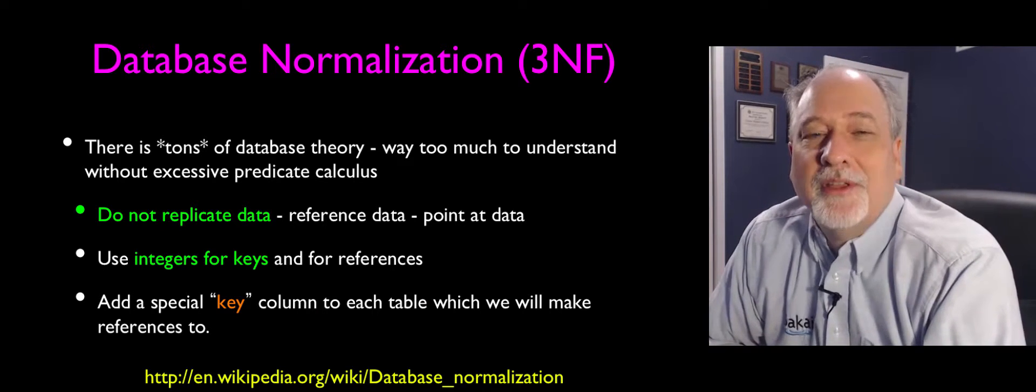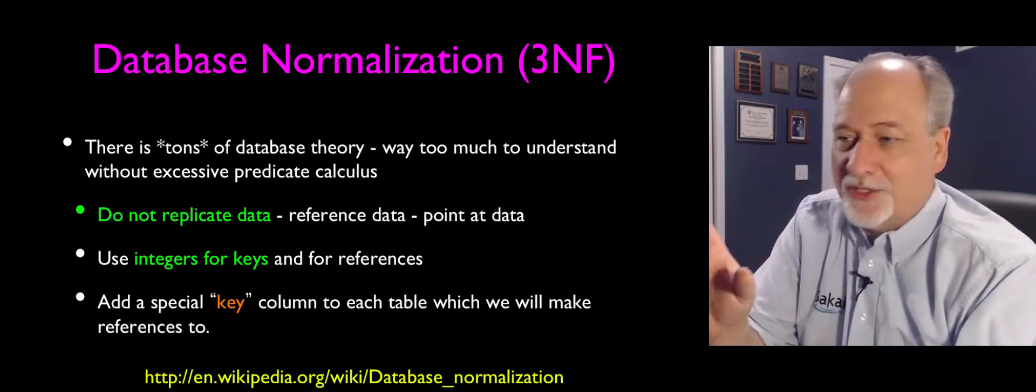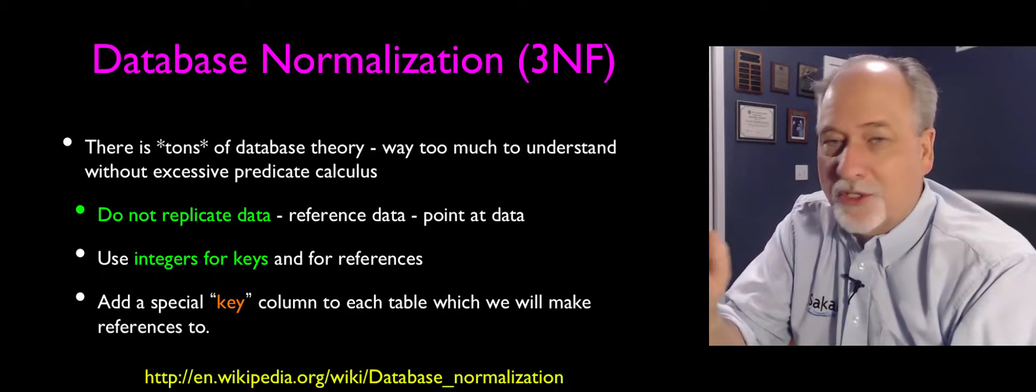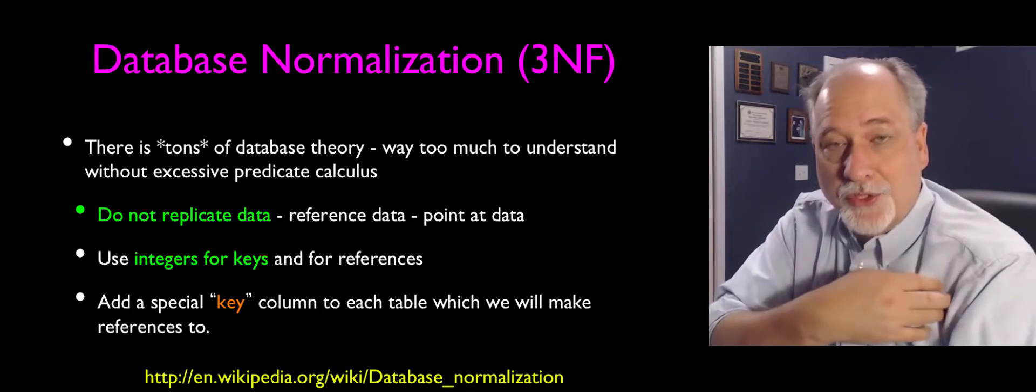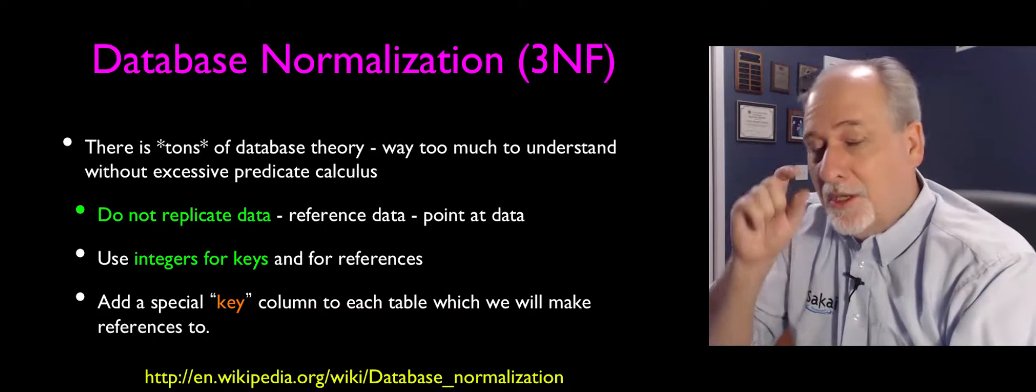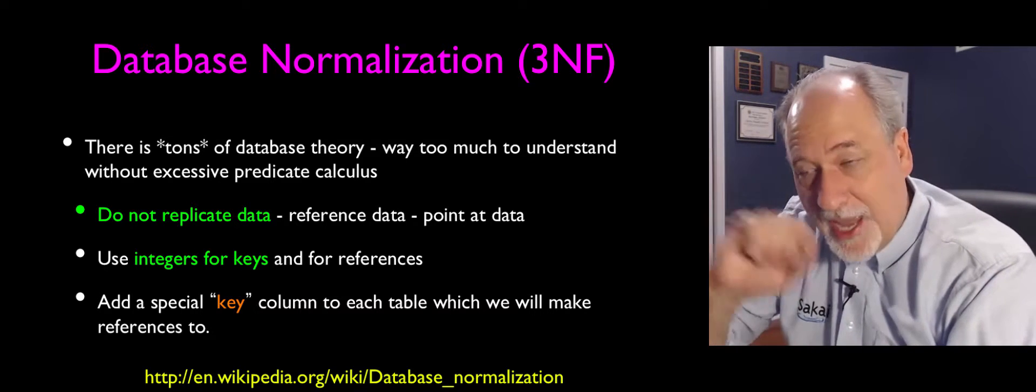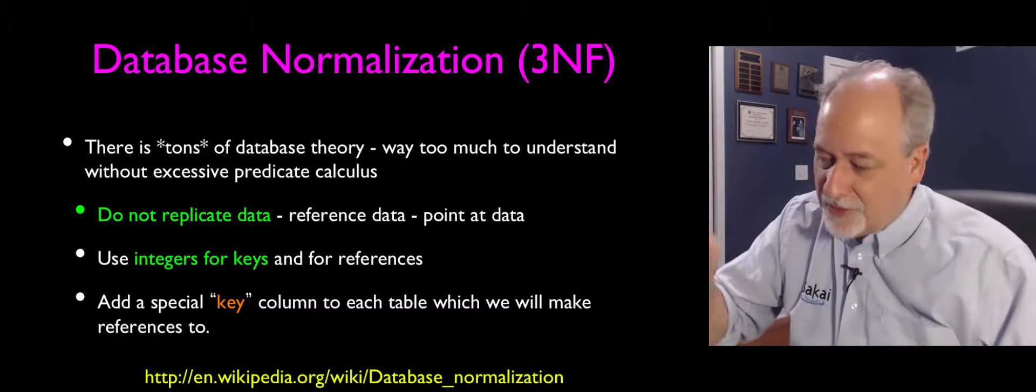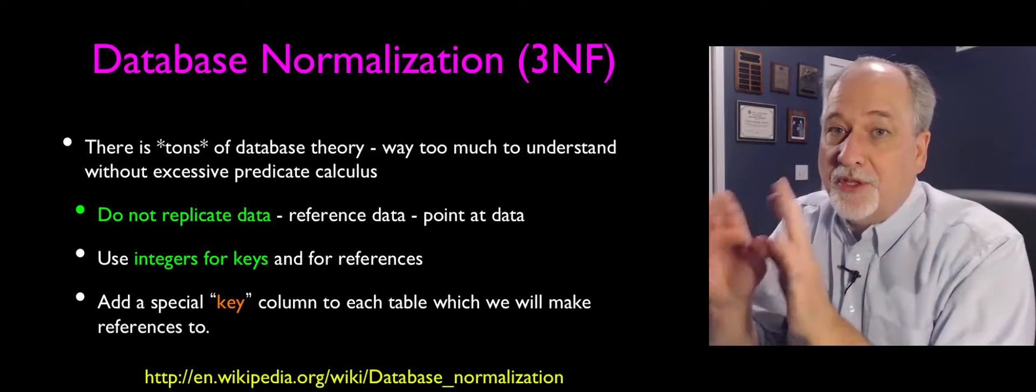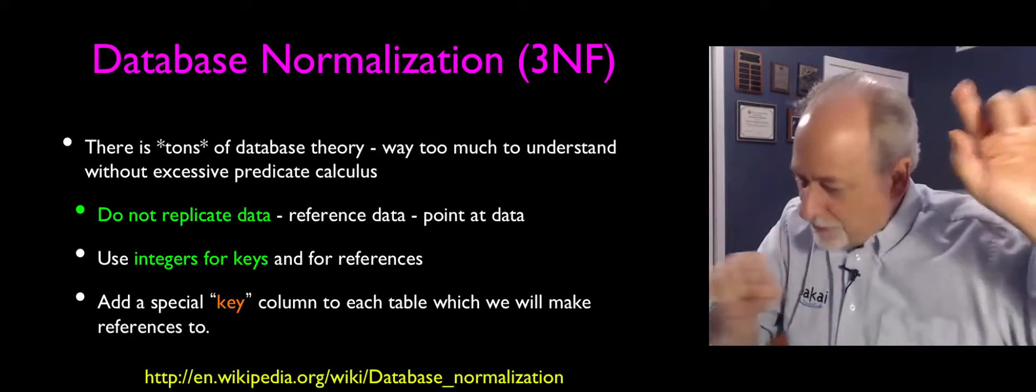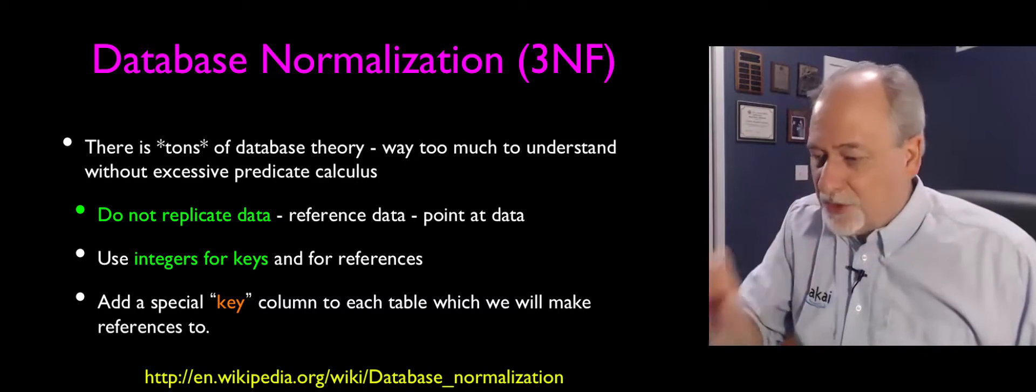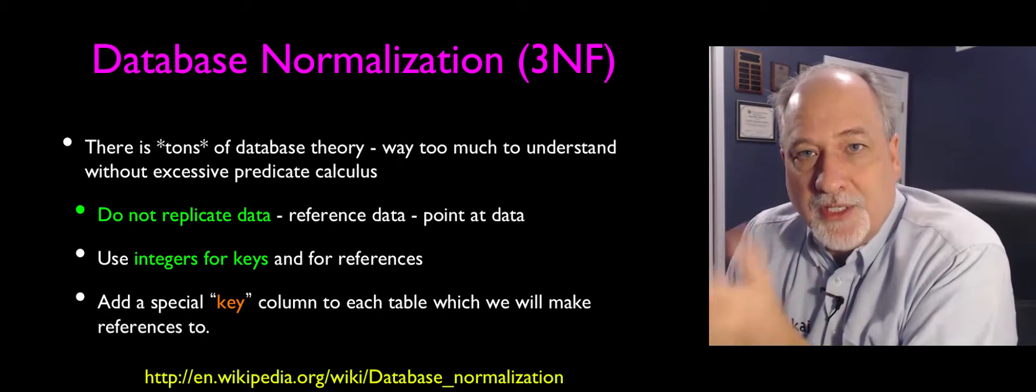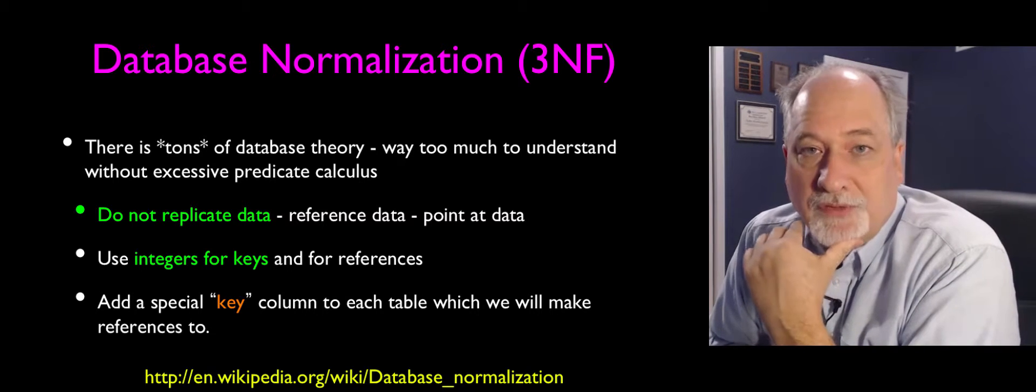The rule is never replicate a string. You can have a learning management system with hundreds of tables and billions of records, but the word Charles Severance as it refers to a particular user should only appear one place. And what we do is we use numbers to act as proxies for those strings. Charles Severance ends up with a number, 12. And then we put 12, 12, 12, 12, 12, instead of Charles Severance, Charles Severance, Charles Severance.